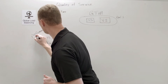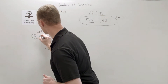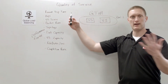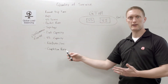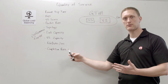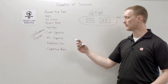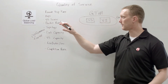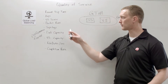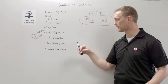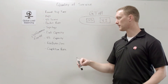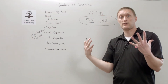The performance factors that it looks at are: round trip time, hops, virtual server score, packet rate, topology, link capacity, virtual server capacity, kilobytes per second, and completion rate.